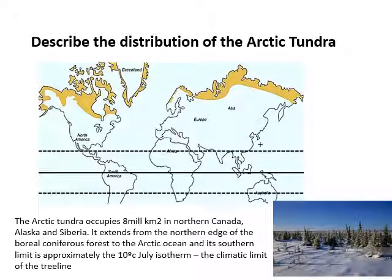The distribution of the Arctic tundra is a huge area — eight million kilometres squared. It covers the northern part of Canada, Alaska, and Siberia, that huge section of Russia. When we look at the ecosystem, you've got from the south the boreal forest and coniferous forest all the way up to the Arctic Ocean. The southern limit to the Arctic tundra is about the 10 degrees Celsius July isotherm — the line at which temperature reaches 10 degrees in July, which is the limit of the tree line.